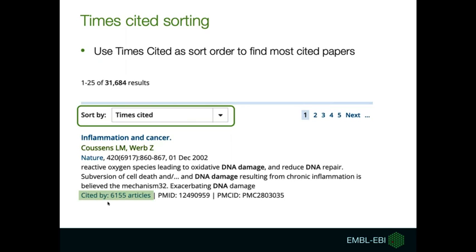The number of citations per paper in Europe PMC might be a little lower than the counts in Scopus or Web of Science because we do not have access to the same range of content as these resources. However, highly cited articles in Europe PMC correlate with highly cited papers in other platforms, and our citation information is freely available.